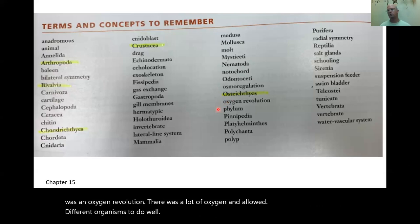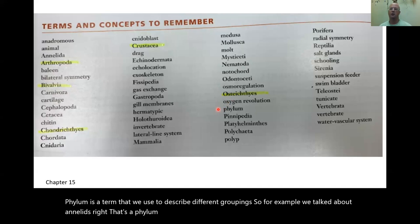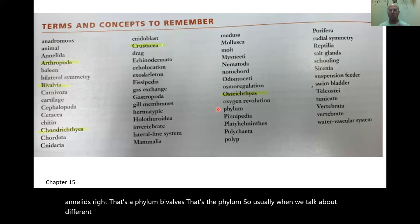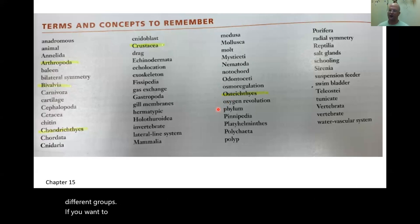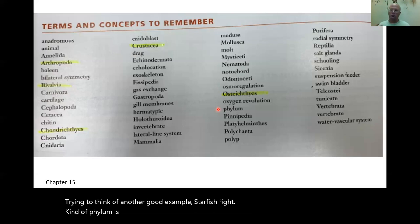Phylum is a term we use to describe different groupings. For example, annelids are a phylum, and bivalves are a phylum. When you talk about worms or starfish, those are phylums. A phylum is a kind of natural grouping — when people talk about different groups of animals, it's usually by phylum.